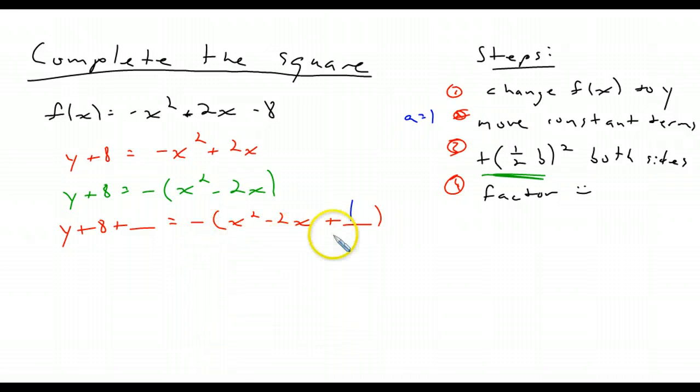So I have 1 in there. But notice on this side, I added negative 1. So you've got to look at the negative on the outside of the parentheses. So I need to do negative 1 on that side. So I have y plus 7 equals negative x minus 1 squared.